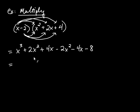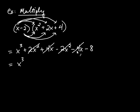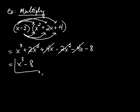We can combine like terms. The x cubed can't combine with any other term. But 2x squared and negative 2x squared cancel each other. The positive 4x and negative 4x also cancel, because 4 minus 4 is 0. But we still have the negative 8. So our answer is x cubed minus 8.